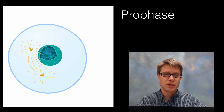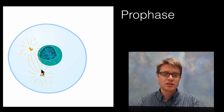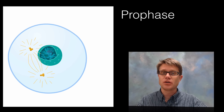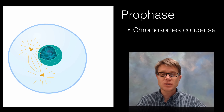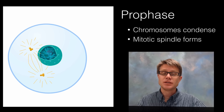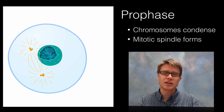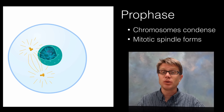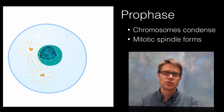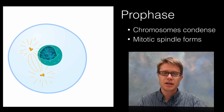Moving into prophase, you can see two big things happening: the DNA is starting to condense, and the microtubules are attaching all the way across from the centrosomes. So the chromosomes condense, and the mitotic spindle starts to form — that's what was dyed blue in the sea urchin video, organizing the division of the nuclei itself.